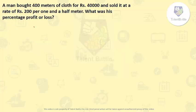A man bought 400 meters of cloth for Rs. 40,000 and sold it at a rate of Rs. 200 per 1.5 meter. What was his percentage profit or loss? So they have given cost price for 400 meter is Rs. 40,000. And he is selling 1.5 meter at Rs. 200.